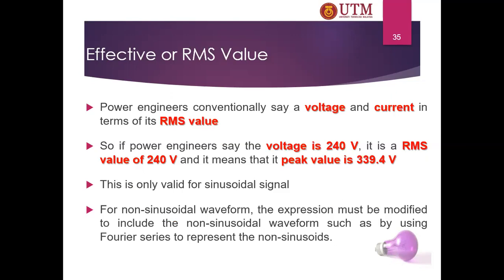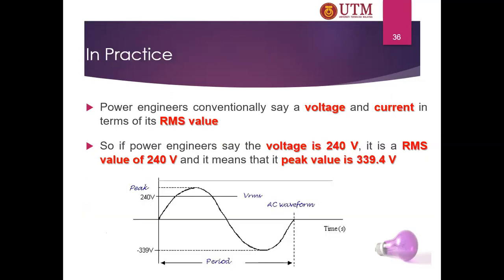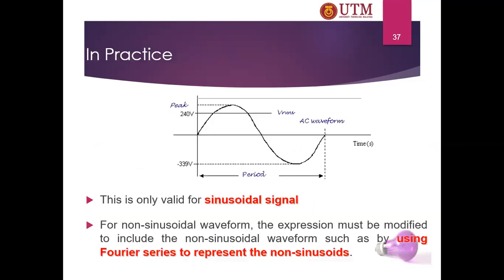Power engineers conventionally state voltage and current in terms of RMS values. So when a power engineer says the voltage is 240 volts, it means 240 volts RMS, which corresponds to a peak value of approximately 339.4 volts.